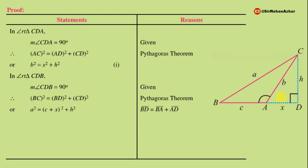Expanding (c + x)²: a² = c² + 2cx + x² + h². This is equation (2). Comparing equation (1) and (2), equation (1) gives x² + h² = b². So in equation (2), we can replace x² + h² with b².